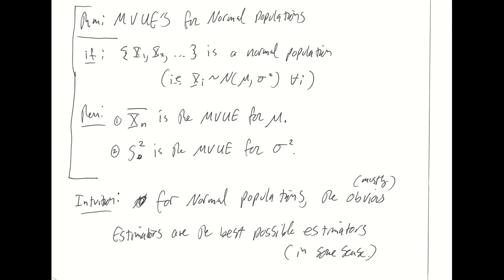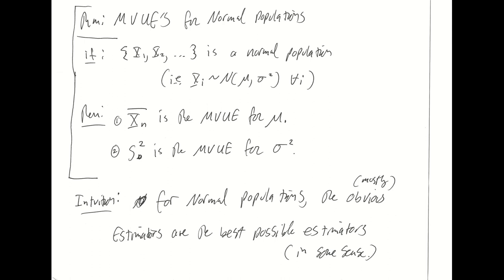For normal populations, we do have minimum variance unbiased estimators using our favorite, most obvious point estimators for two population parameters. We are abbreviating the treatment of point estimators to a single lecture so we can spend more time talking about statistical hypothesis testing — that's our primary interest at this point. These are the types of questions that could be asked over this material, and some of this could be combined with questions about confidence intervals, as we'll see over the next two lectures.